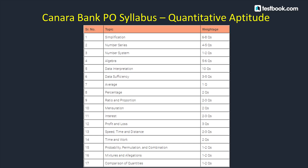For Data Sufficiency, 3-5 questions. For Average, 1 question. For Percentage, 2 questions based on calculation-based percentage problems. For Ratio and Proportion, 2-3 questions covering Compound Ratio, Simple Ratio, and Direct and Indirect Proportions.